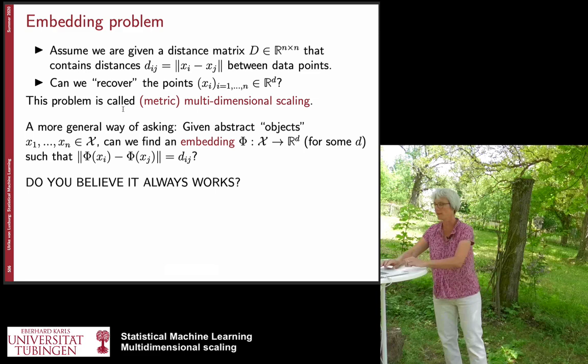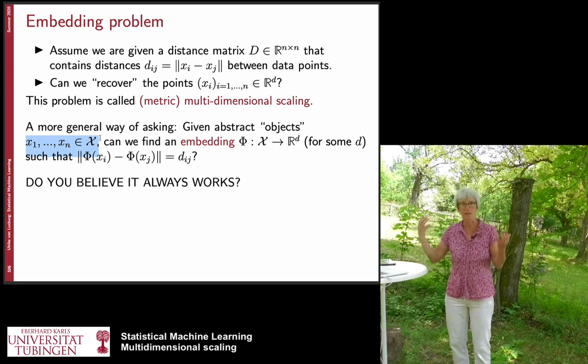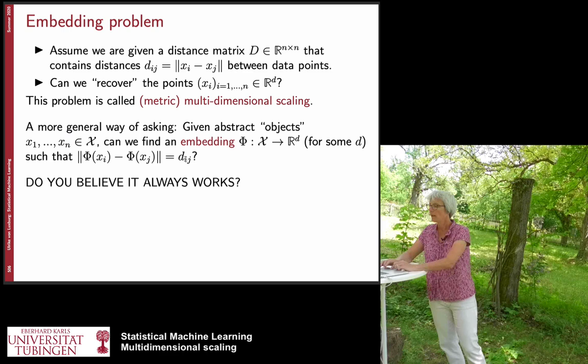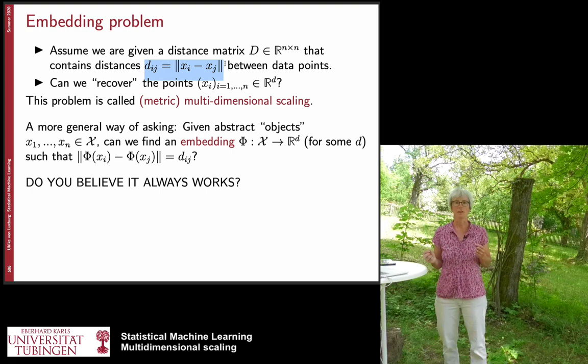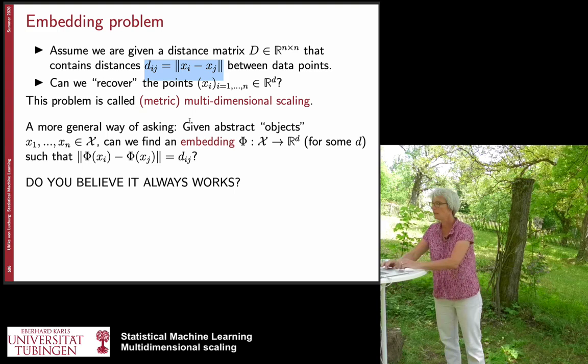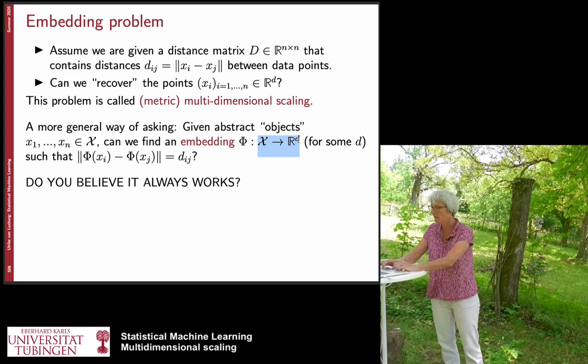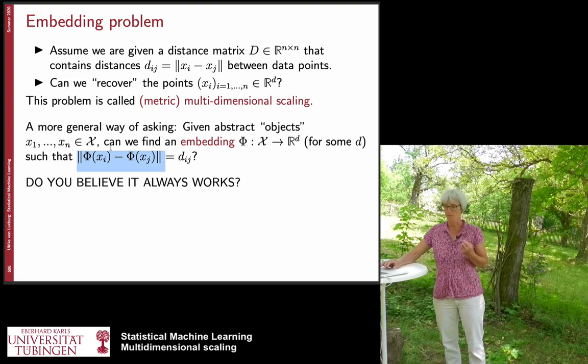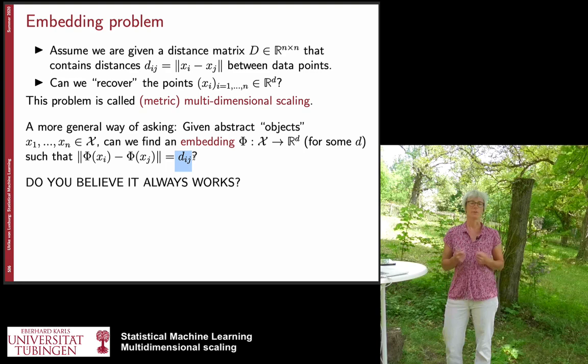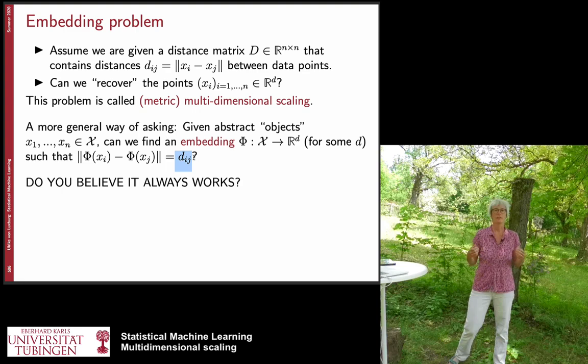Formally, we are given abstract objects x1 to xn living in some abstract space — it doesn't need to be a Euclidean space, it can be anything. We have distances; if our objects come from Euclidean space, these distances would be the norm between data points, but in general it can be any distance function. The question is: can you find an embedding — a mapping from the original space into R^d — such that the distances between embedded points exactly coincide with the given distance values? Such a problem is called a metric embedding problem.